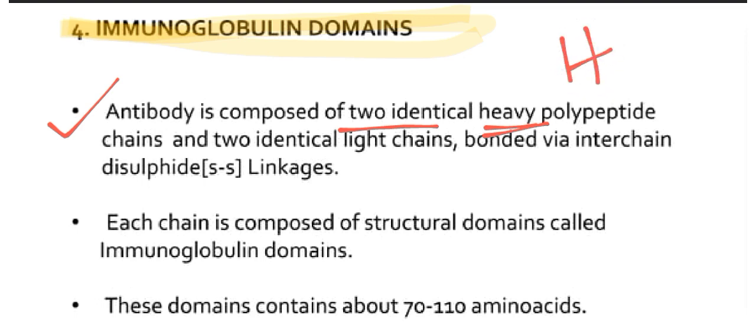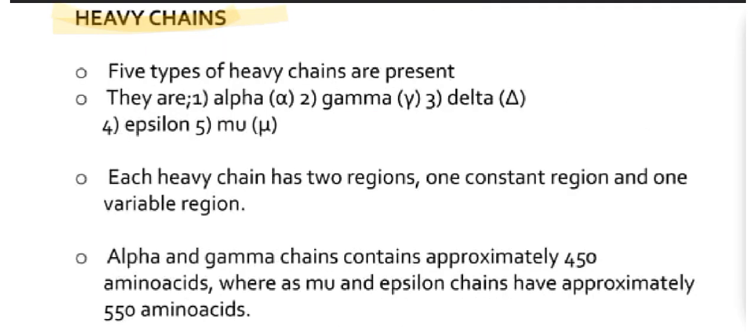Now we will see heavy chains. Five types of heavy chains are present. They are alpha, gamma, delta, epsilon, and mu. Each heavy chain has two regions: one constant and one variable region.